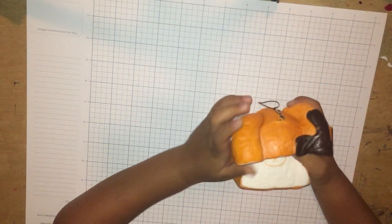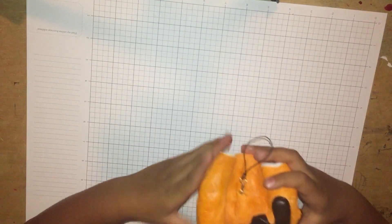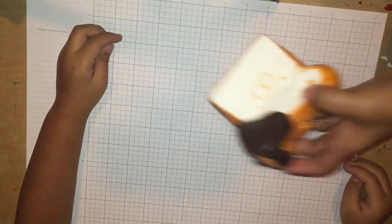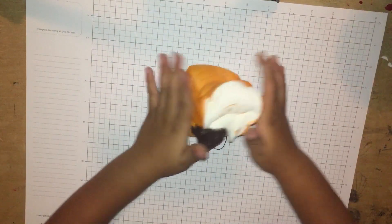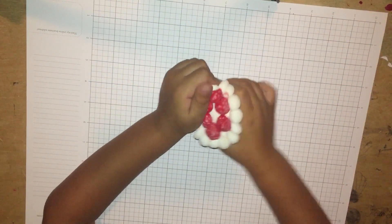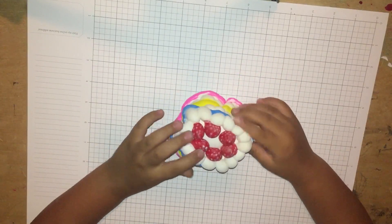Next we have this bread, super squishy, smells delicious but do not eat. You have to show it here so they can see it. It's pretty squishy. Next one we have the cake, it's pretty soft, smells good too.